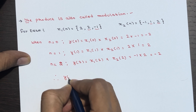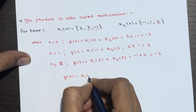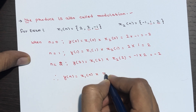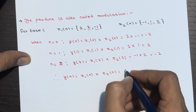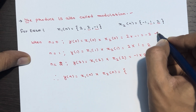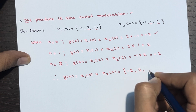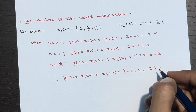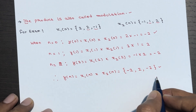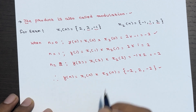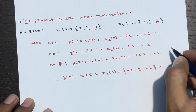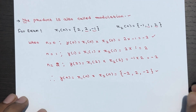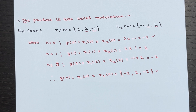So we find that y(n) = X1(n) × X2(n) gives: at n=0, -2; at n=1, 2; at n=2, -2. This is the resultant signal y(n). This is how you solve signal multiplication in an exam. If you have any doubts or questions, feel free to reach out in the comment section and don't forget to subscribe to our YouTube channel.